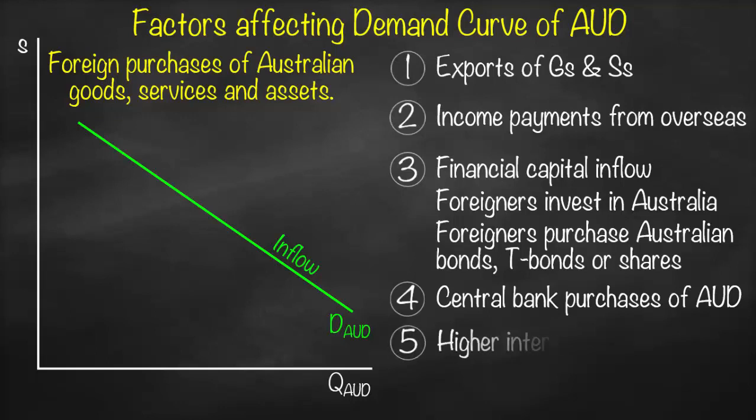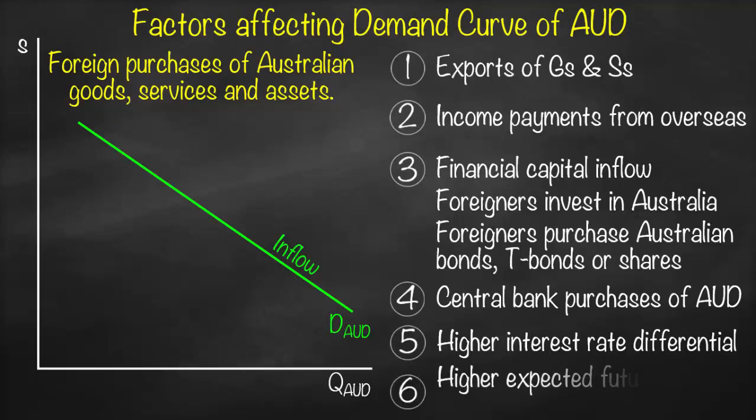Another factor is a higher interest rate differential — meaning Australia's interest rate is relatively higher compared to other countries, such as Europe. In this case, Europeans would prefer to deposit their money in Australia to earn a higher interest rate, resulting in more cash inflow to Australia. Since inflow affects the demand curve, this will shift the demand curve to the right.